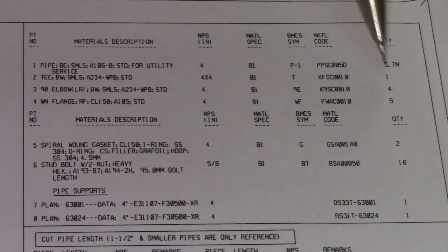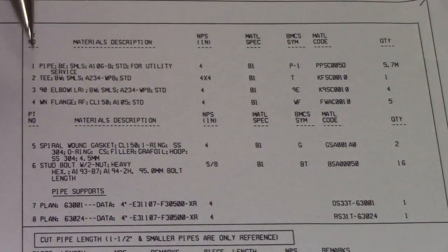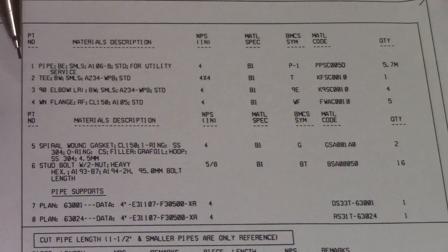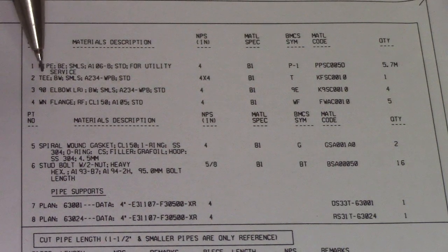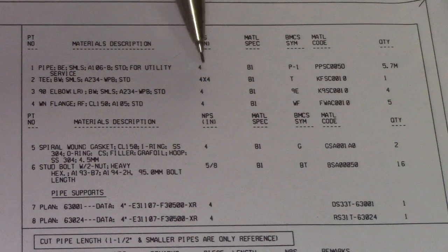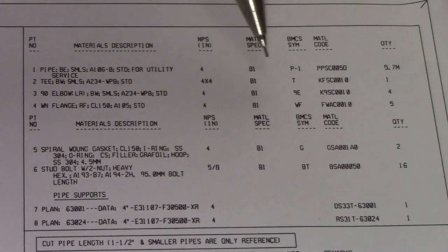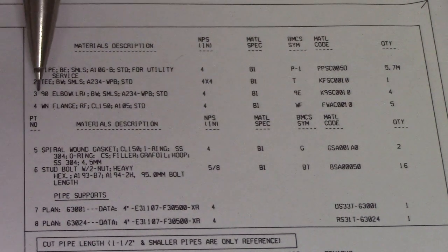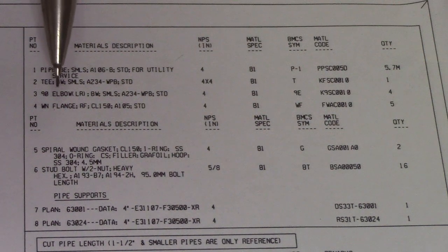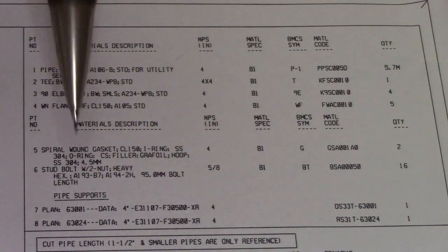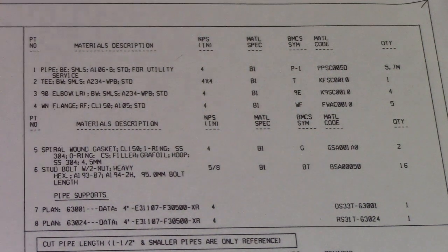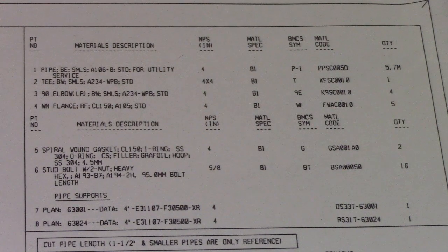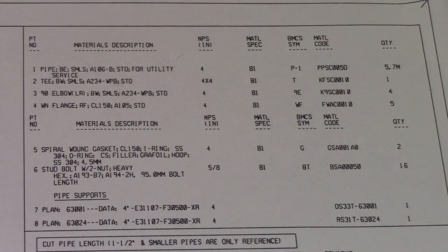Number two is a tee — check the size 4 by 4 and also the material code. Number three is an elbow, and so on. Check all these materials and prepare them, then bring everything to the fabrication shop.